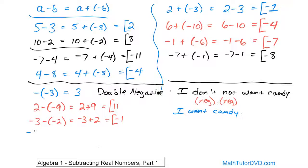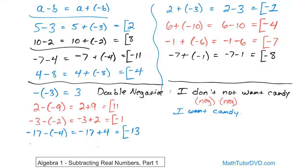Negative 17 minus negative 4: the two negatives make a positive 4, giving negative 17 plus 4. Adding two different signs, you subtract: 17 minus 4 is 13, and the sign goes with the larger absolute value, negative 17, so the answer is negative 13. Finally, 9 minus negative 21: the two negatives make a positive, giving 9 plus 21, which equals 30.